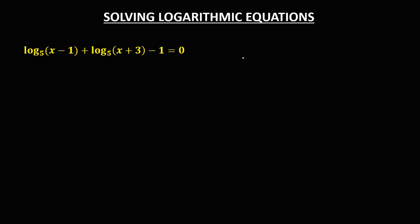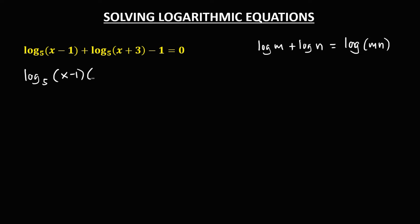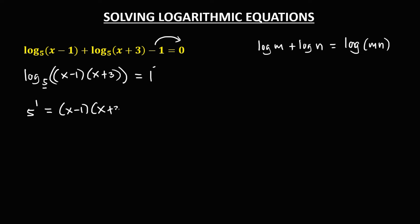Then for this given, using the properties of logarithm — that log m plus log n equals log m times n. So therefore, we combine log(x minus 1) and log(x plus 3). Transpose this negative 1, so equals positive 1. Then to write this in exponential form: 5 to the power 1, then equals x minus 1 times x plus 3.